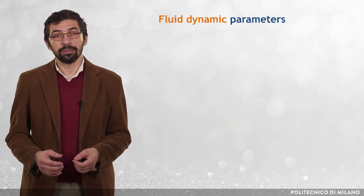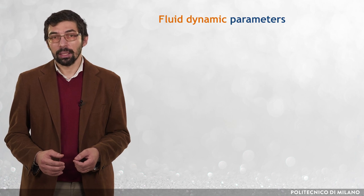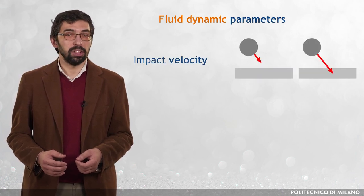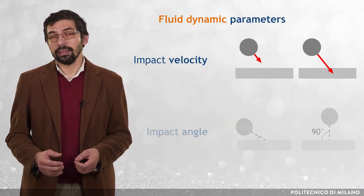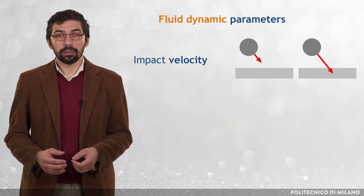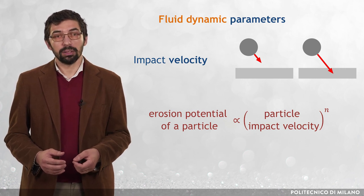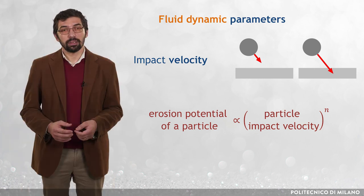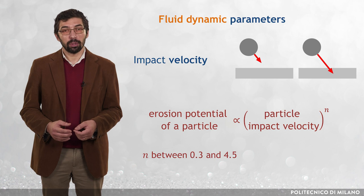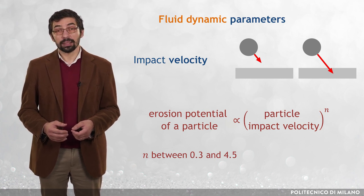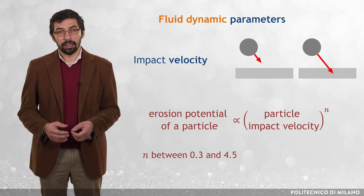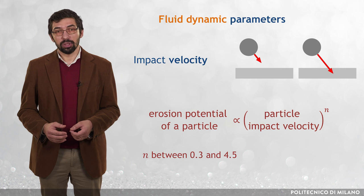We will now turn our attention to fluid dynamic parameters affecting the impact erosion of materials. These are the particle velocity at the stage of impingement, called particle impact velocity, and its inclination angle, called particle impact angle. Based on energy considerations, it was argued that the erosion potential of a particle scales with its impact velocity to the power 2, which was further modified as a generic exponent N based on experimental observations. In the literature, the value of N varies in the range 0.3 to 4.5 according to the materials involved and the particle impact angle. Furthermore, N might change at very high values of impact velocity; in particular, N might decrease for brittle particles which undergo fragmentation, and it was observed to increase for unbreakable particles.